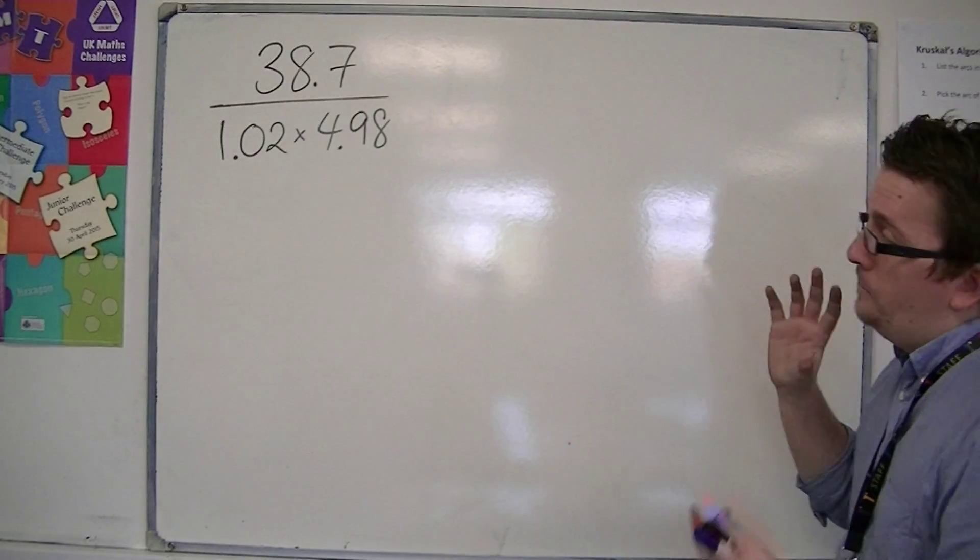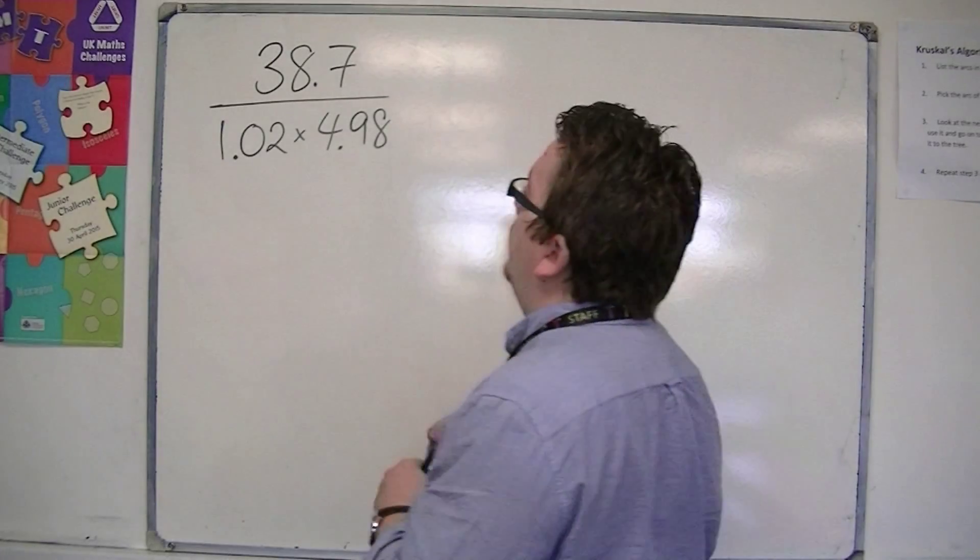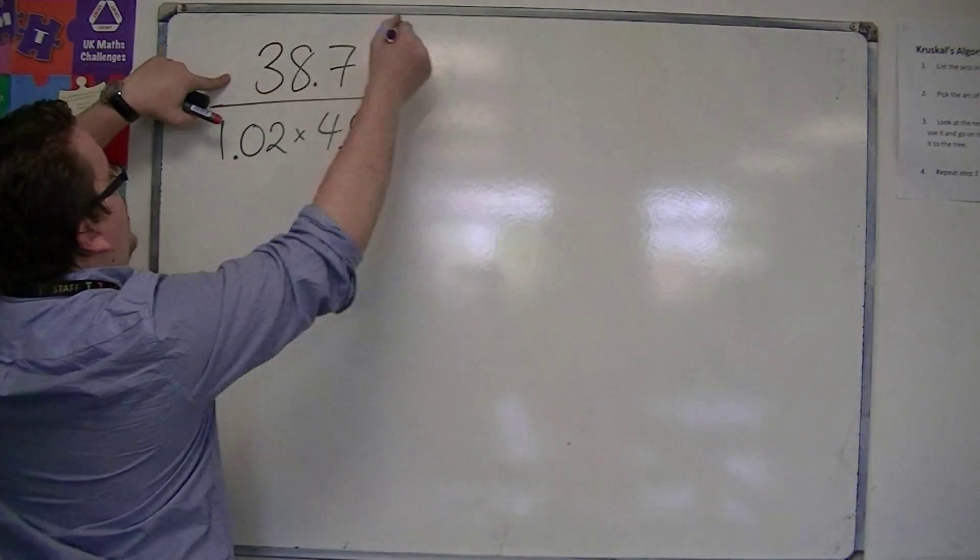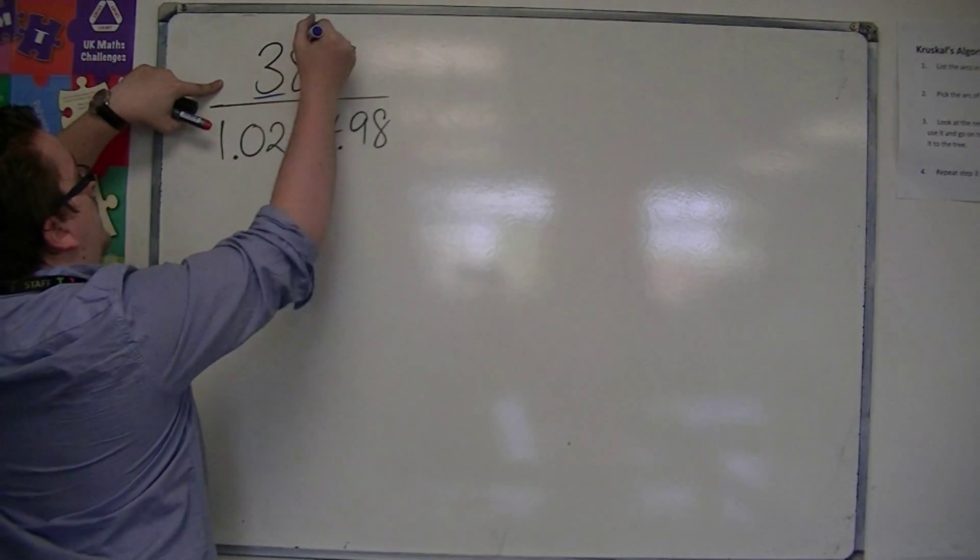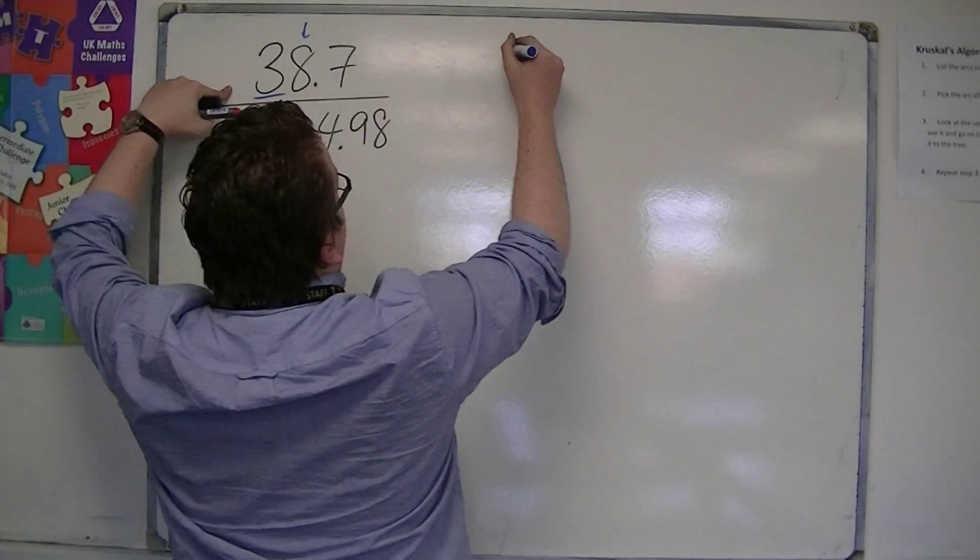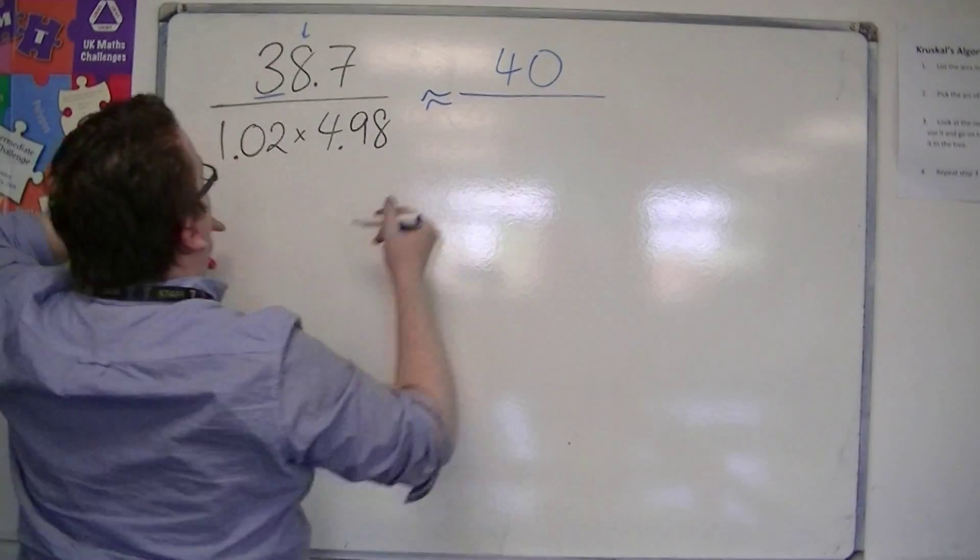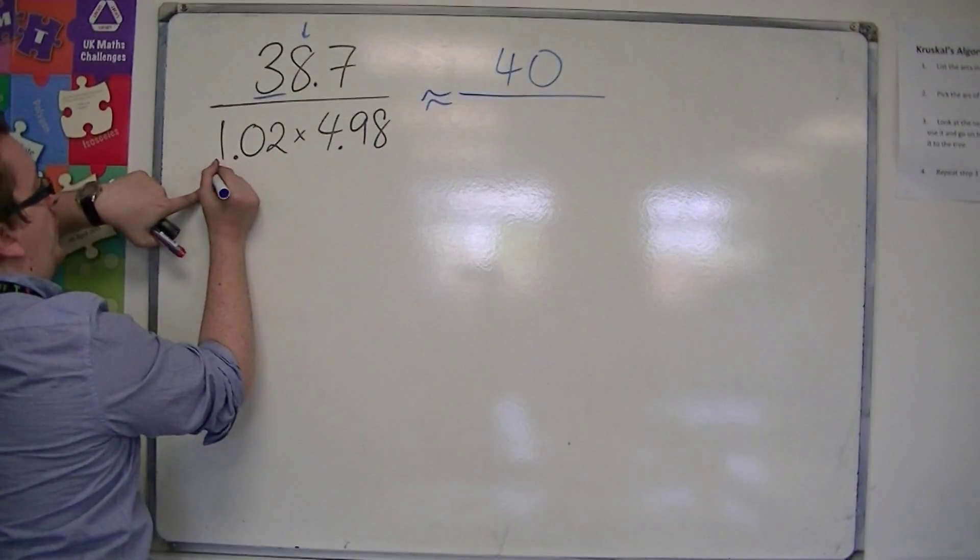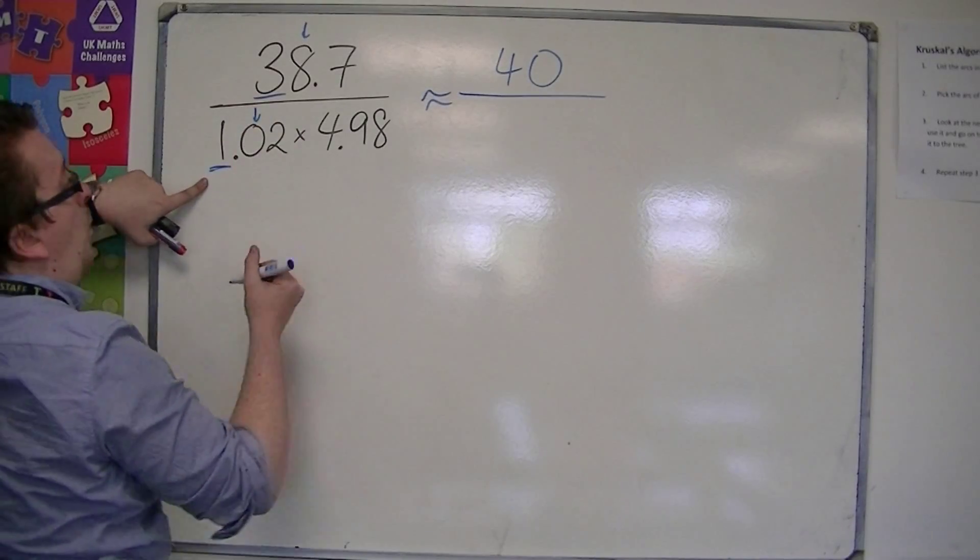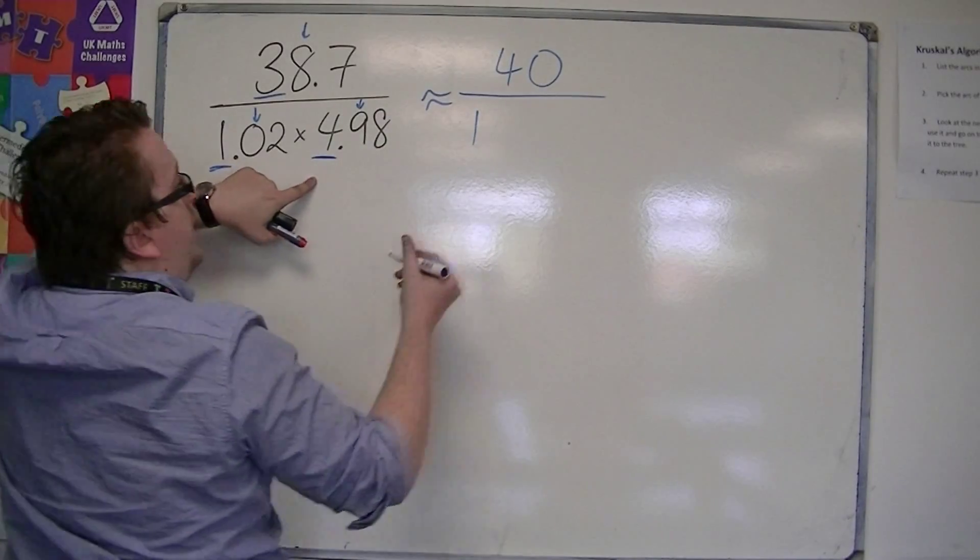But you start off, round each of the numbers to one significant figure. So we've got this 38.7, so this would round to 40, over 1.02 would round to 1, and 4.98 would round to 5.